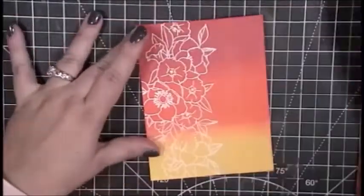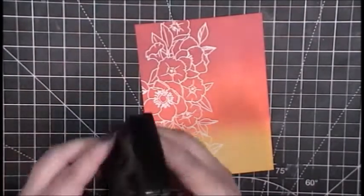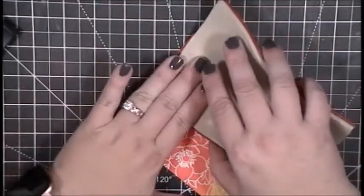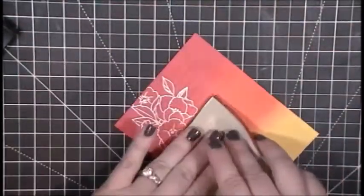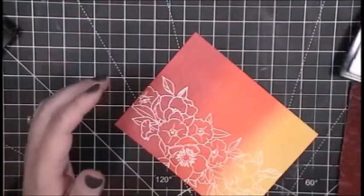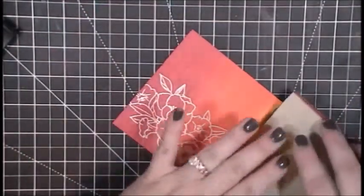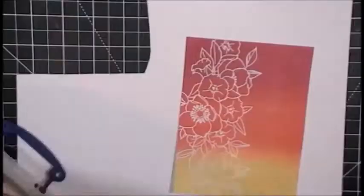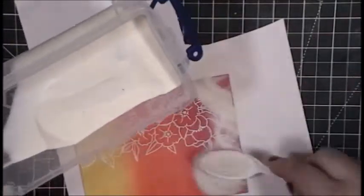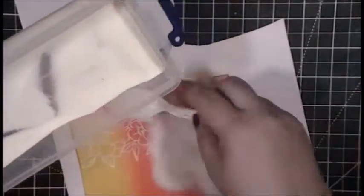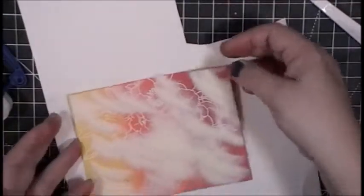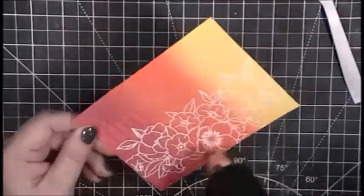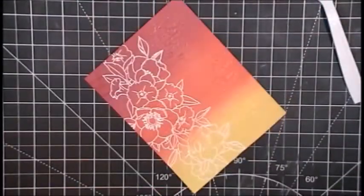I am going to emboss this with white embossing powder. I keep my embossing powders in these pencil cases with the latching lid so that I can just hold the card panel right over the container and have the embossing powder fall right back into the container. I did decide I wanted the background to have just a little bit more texture, a little bit more interest. So I am going to add some more embossing powder. And then I have this old script stamp from Stampin' Up.